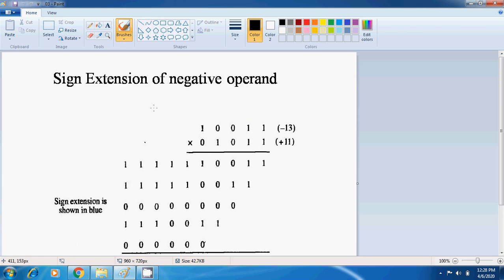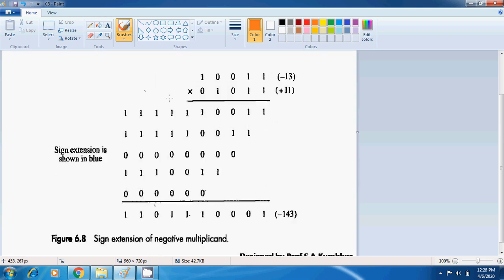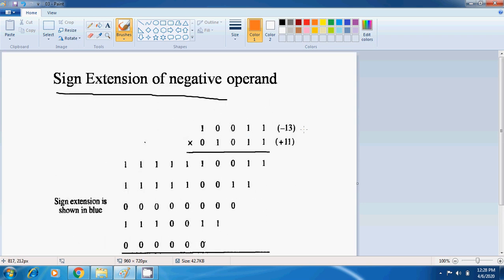So let us start to understand sign extension mechanism. Purposefully here I am taking negative operand, so we are having multiplicand is negative and multiplier is positive. So let us learn how exactly the sign extension method is used for multiplication.